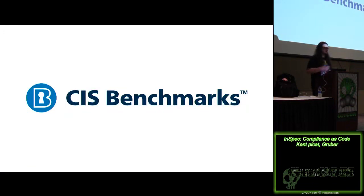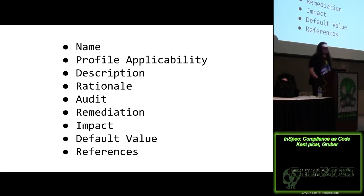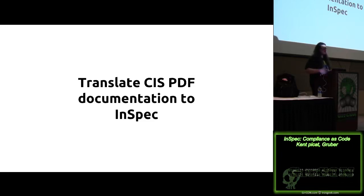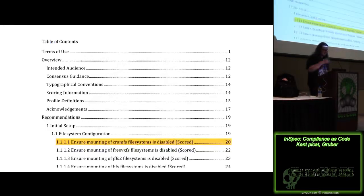One example of turning a PDF into an InSpec profile is a CIS benchmark. If you don't know what CIS benchmarks are, it's basically a bunch of rules with a name, profile applicability, description, and various fields — you scroll through this 100-page PDF and check if you're in compliance. Some controls are scored, some not. Let's translate a CIS PDF into an InSpec profile — just a small example. I'm pulling from the CentOS Linux 7 benchmark.